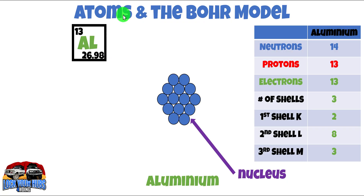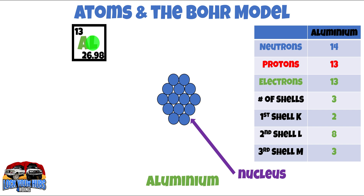First up, we're going to look at atoms and the Bohr model to describe atoms. Atoms are the smallest part of something which is still that element — in this case, aluminium. You'll recognize this from the periodic table, probably from secondary school for some of us many, many years ago. AL being aluminium. Now this is the atomic number and the atomic weight. We don't really have to worry about the atomic weight for electronics, but we do have to worry about the atomic number.